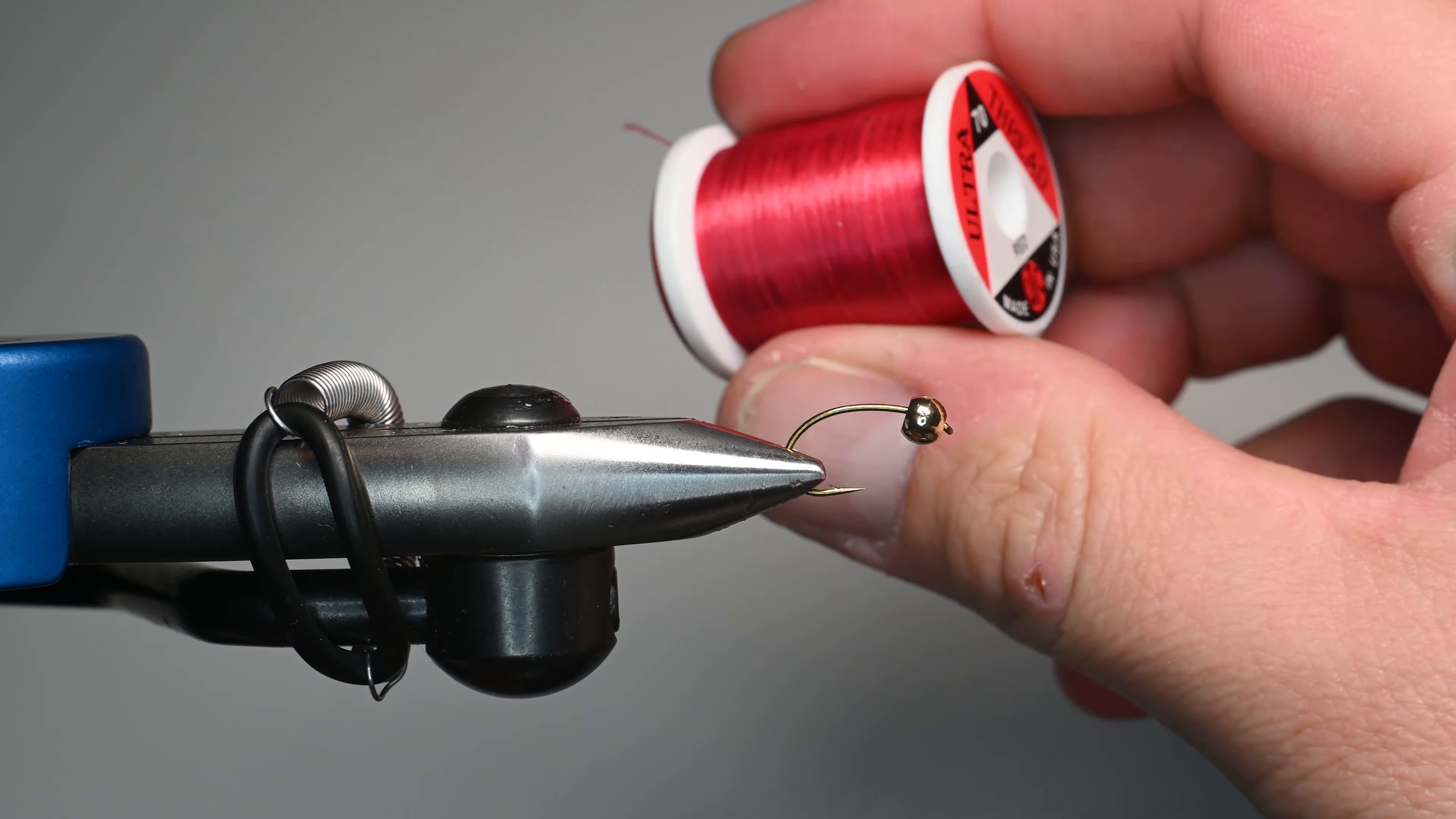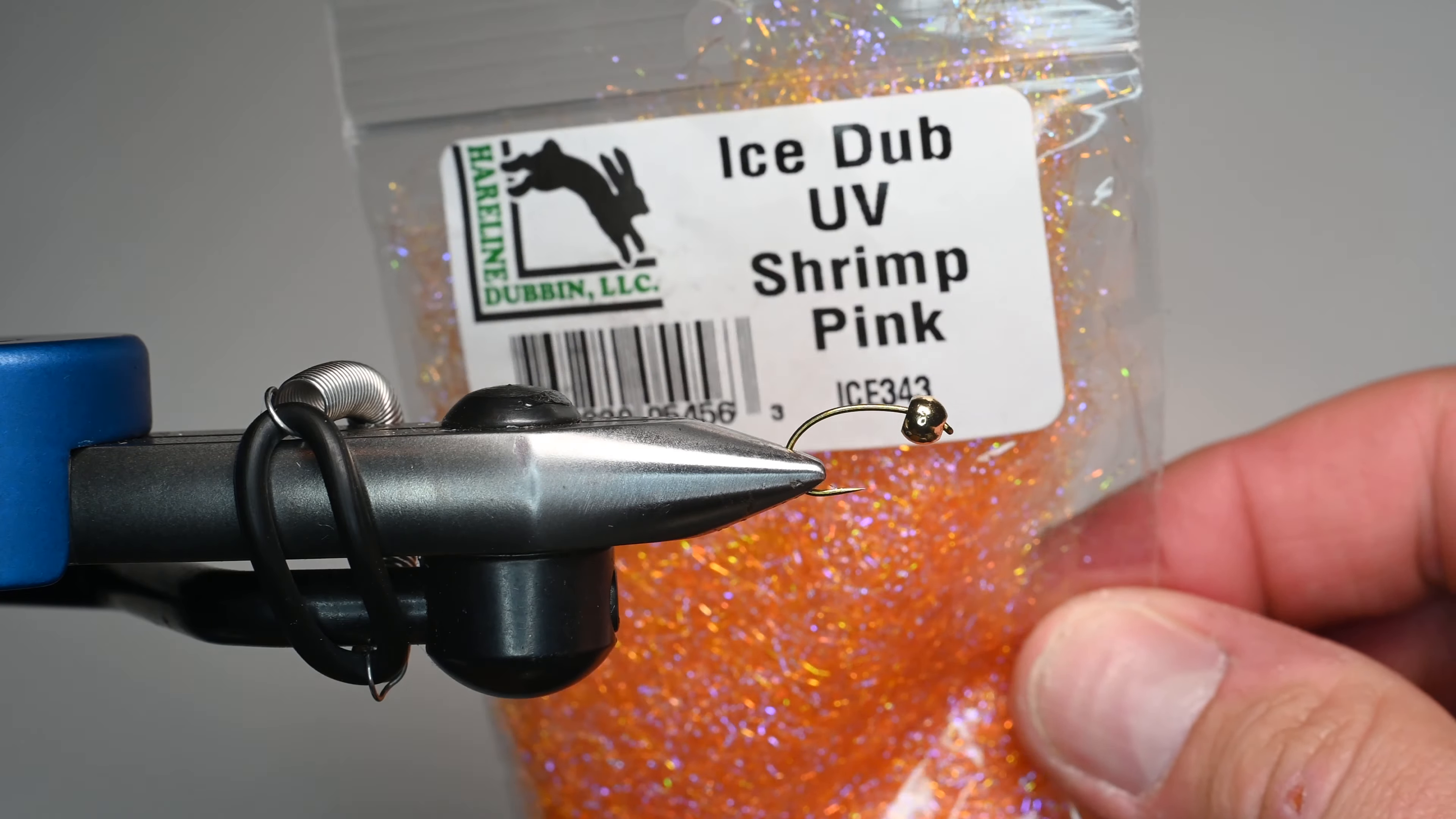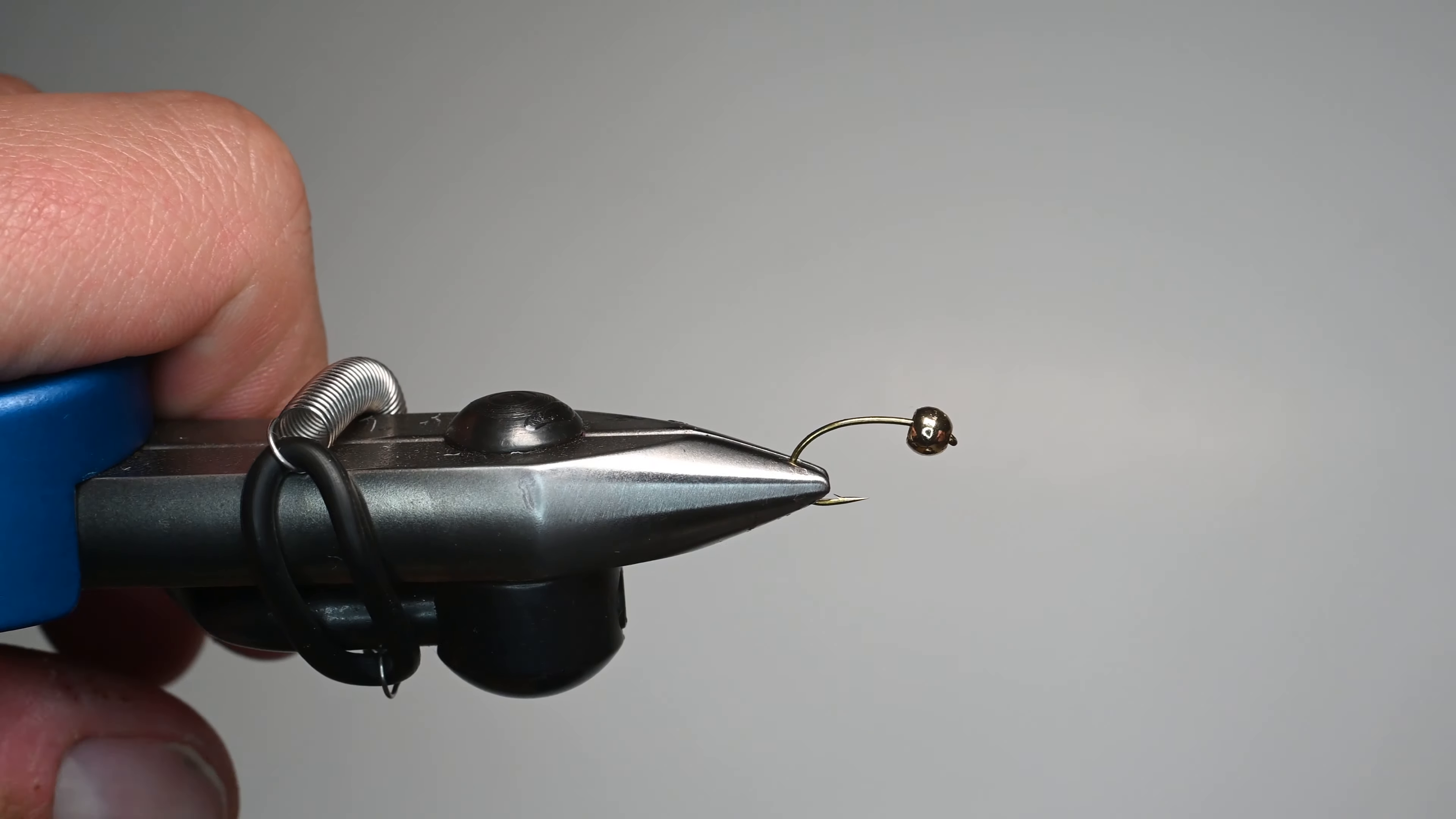We're going to use a 70 denier thread in red. The red or orange or pink are my go-tos for this for a collar. Of course, the secret material is the shrimp pink ice dub. This is a super effective color when used as a collar for nymphing.